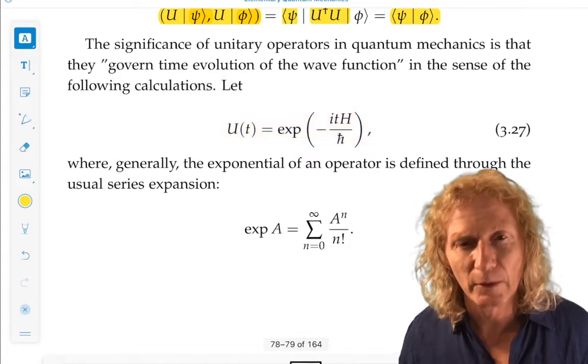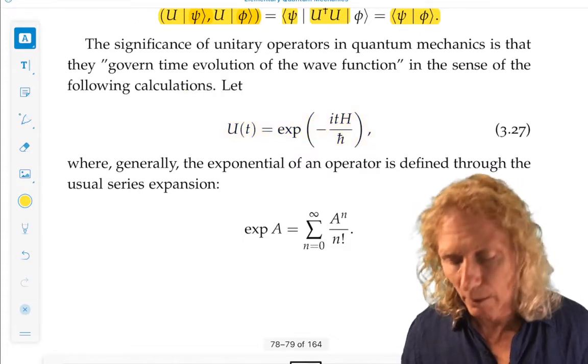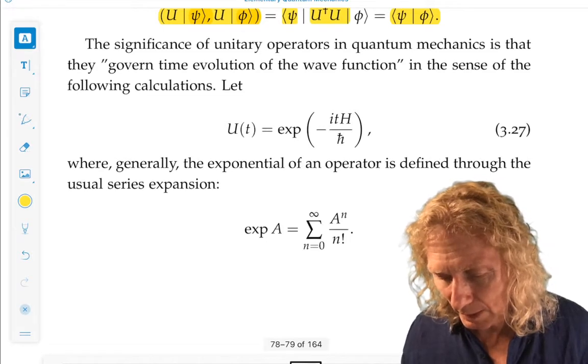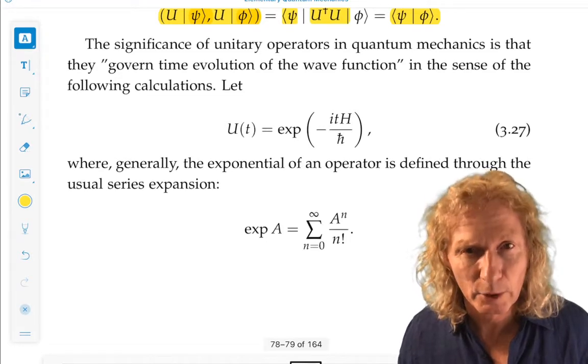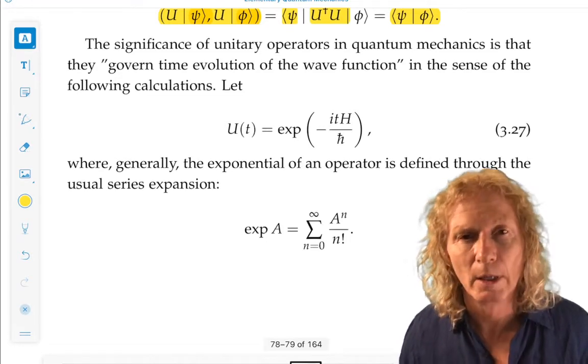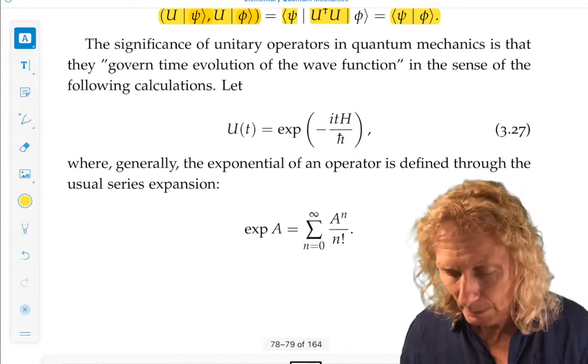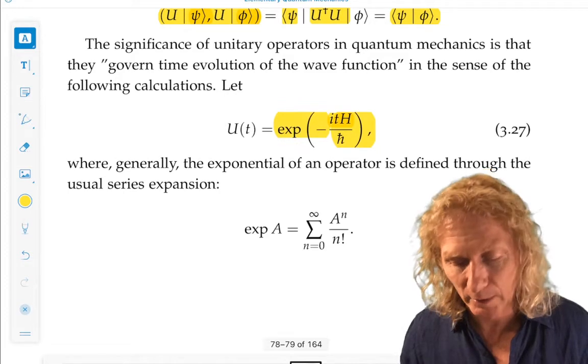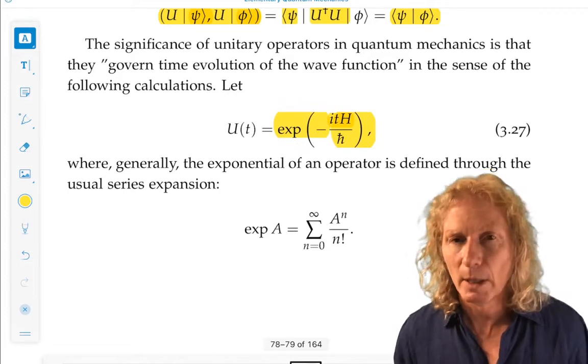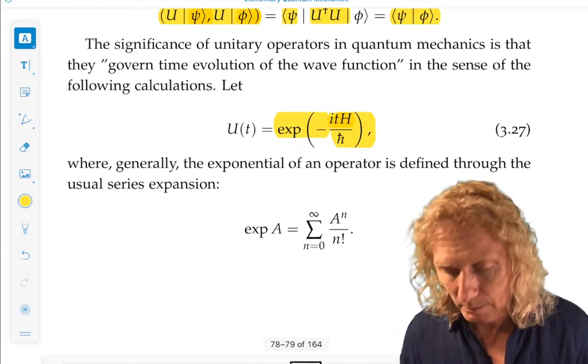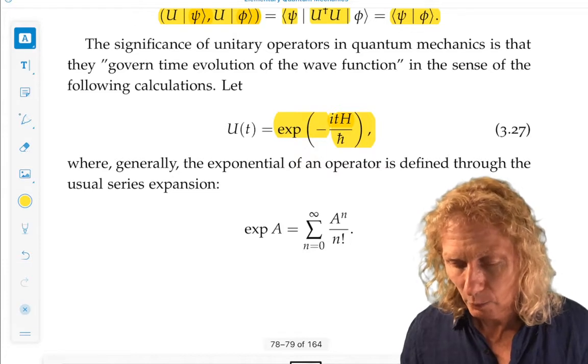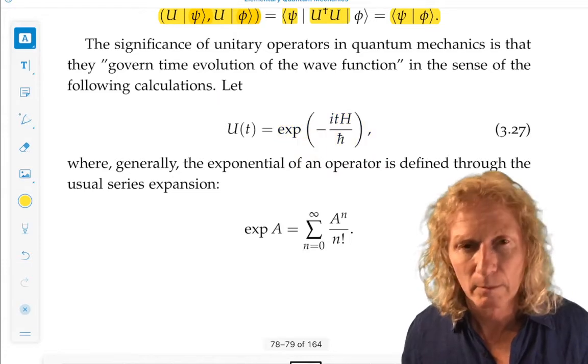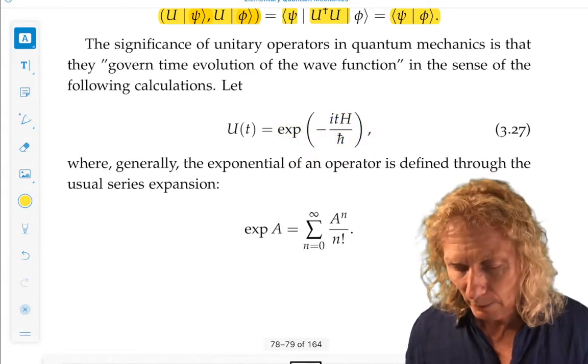But what this operator is, is the exponential of minus iH, Hamiltonian, divided by ℏ. H is self-adjoint. It's possible to prove that this is unitary in the sense of the definition above, but I'm going to leave that for the moment and ask, what does the exponential mean?